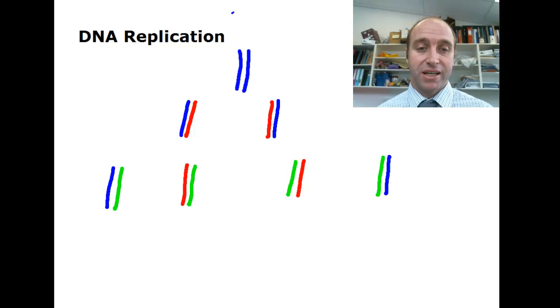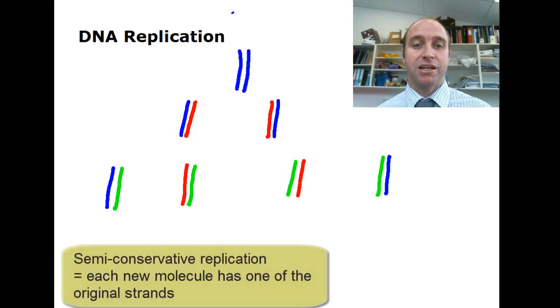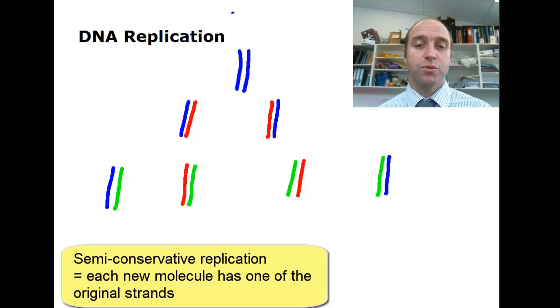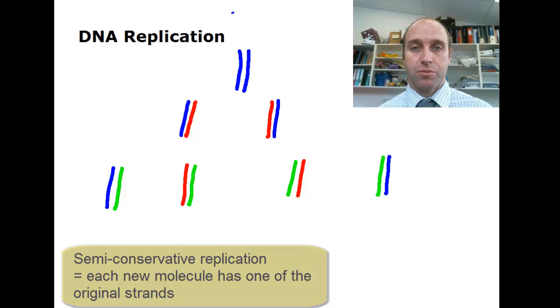We call this replication, semi-conservative replication. It conserves one of the original strands. So every time there's a reproduction, one of the original strands remains. And that's how we can ensure that we have an exact copy.